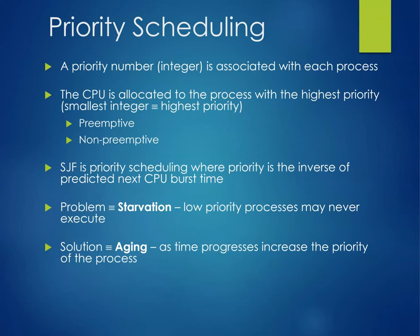Priority scheduling assigns a priority number to each process. The CPU is allocated to the process with the highest priority — usually the smallest integer is the highest priority. It can be handled both preemptively and non-preemptively. Shortest job first is priority scheduling where priority is the inverse of predicted next CPU burst. However, there's a problem: starvation — low priority processes may never execute. The solution is aging: as time progresses, increase the priority of the process.